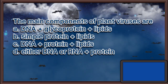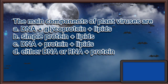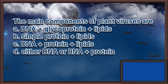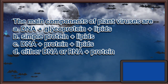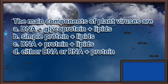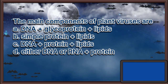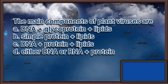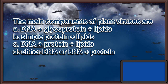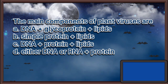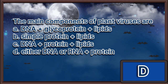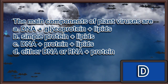The main components of plant viruses are: A. DNA plus glycoprotein plus lipids, B. Simple protein plus lipids, C. DNA plus protein plus lipids, D. Either DNA or RNA plus protein. The answer is letter D.